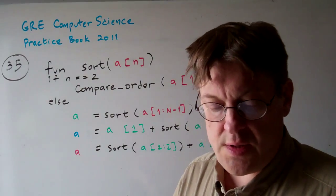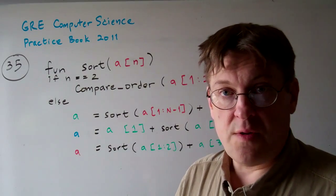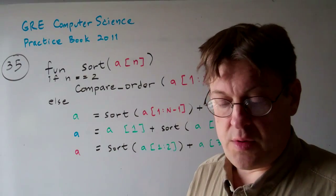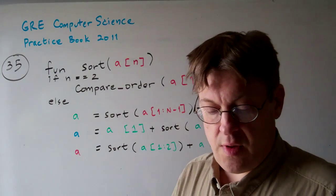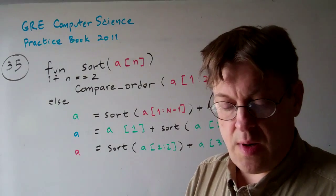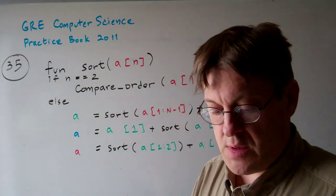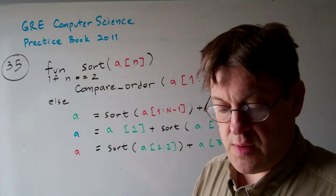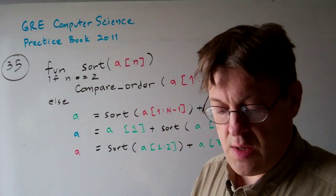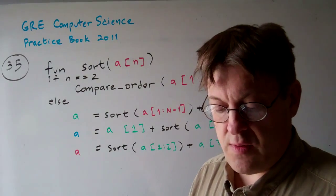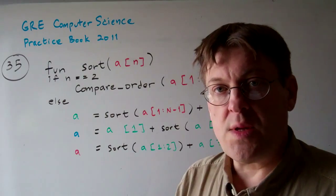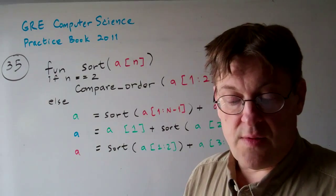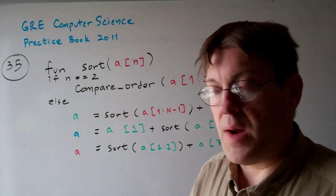Question 35. Consider a recursive algorithm for sorting an array of n ≥ 2 integers. It works as follows: if there are only two elements, compare them. Otherwise, recursively sort the first n minus one elements, then recursively sort the last n minus one elements, then recursively sort the first two elements. What is the asymptotic running time — the complexity measured in terms of number of comparisons?